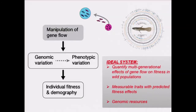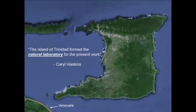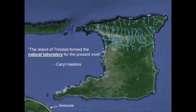To best tackle this framework, a system is needed where it's possible to actually manipulate gene flow, quantify effects on traits and fitness over multiple generations ideally in the wild, and ideally with a reference genome. The work I'll tell you about today took place on the island of Trinidad, which has become known as a natural laboratory for studying the rapid adaptation of guppies and their influence on the ecology of freshwater streams.